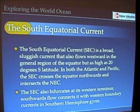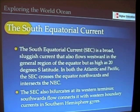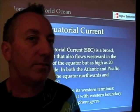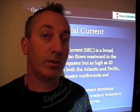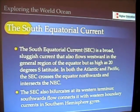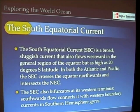The south equatorial current tends to be broad and sluggish — in some places somewhat ill-defined. In the Atlantic and Pacific, the south equatorial current actually crosses the equator, which complicates its naming. In any case, it intersects with the north equatorial current.